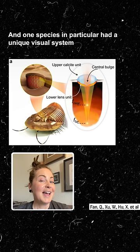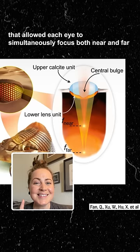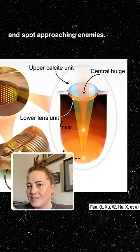And one species in particular had a unique visual system that allowed each eye to simultaneously focus both near and far at the same time, which probably helped it find prey and spot approaching enemies.